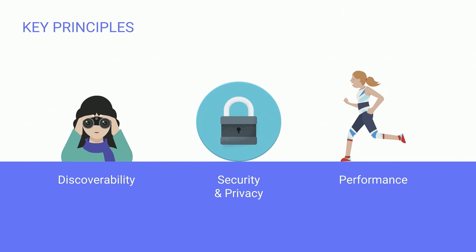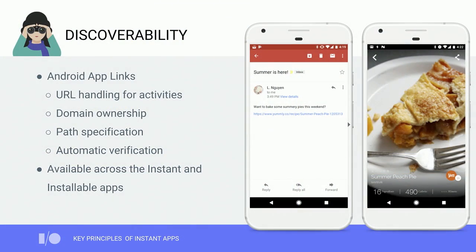Now that you know what Instant Apps are and what user experiences they enable, let's talk about a few key principles to keep in mind as you start building your Instant App. You'll see examples of these principles throughout the rest of this talk. I'll cover discoverability, security and privacy, and performance. Instant Apps are launched from URLs, so the first step is to consider the experiences within your app and make them URL addressable. You can do this very easily with Android App Links, which allows you to associate a domain with your app and support specific paths against that domain within activities. The more paths you support, the more discoverable your app is.